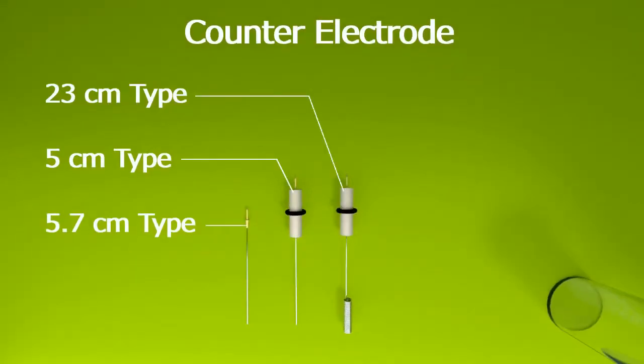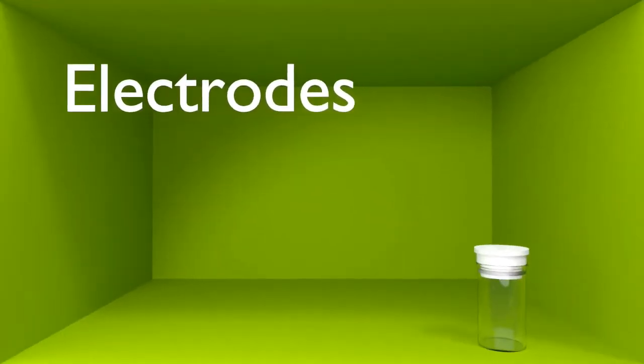The electrodes introduced here are for the usual static-type voltammetry cell. ALS also deals with an electrode lineup for flow type.